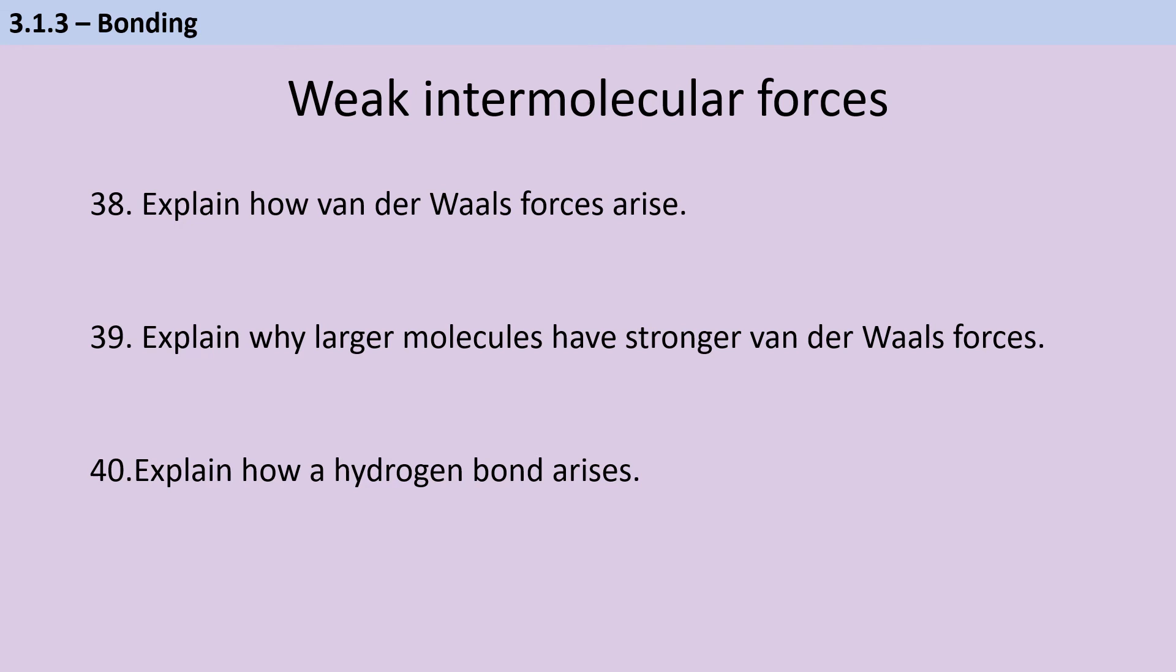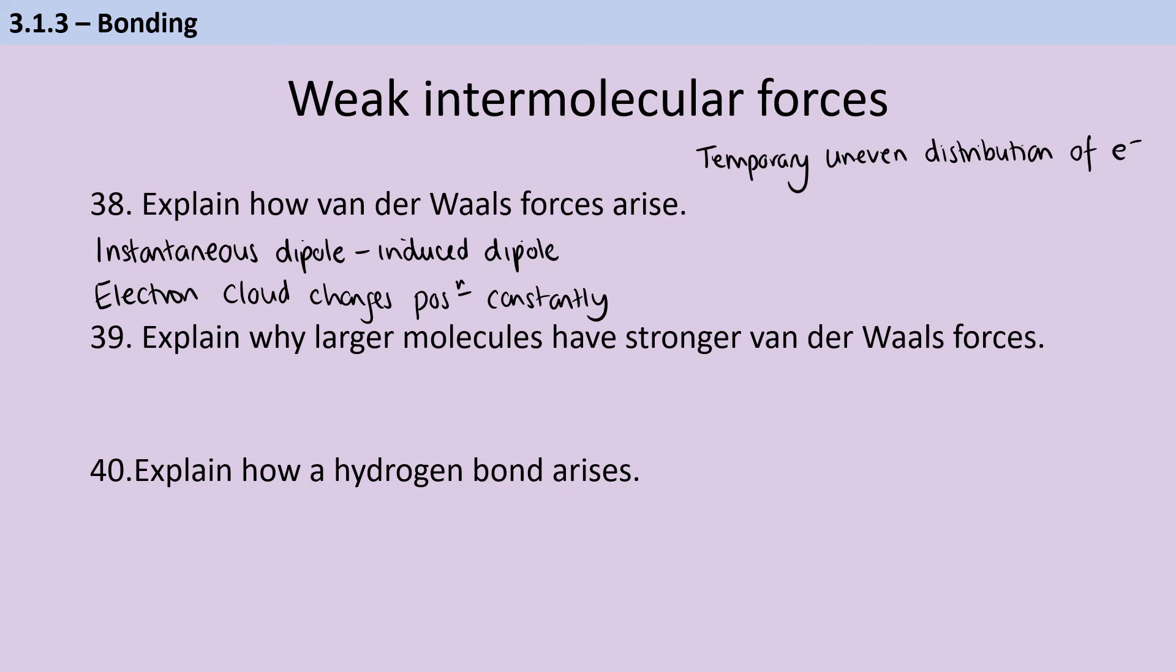It helps to explain why van der Waals forces arise if you know that they're also referred to as instantaneous dipole-induced dipole forces, which is a bit of a mouthful but does explain where this is coming from. So the first thing we need to remember is that electrons do not have a fixed location in space. They're constantly moving and the electron cloud is constantly changing position. So what that means is that we get a temporary uneven distribution of electrons and this is our instantaneous dipole. In other words, suddenly one side of the molecule or even one side of the atom, because, of course, van der Waals forces can arise on noble gases and things that are just single atoms on their own. Suddenly one side has slightly more electrons and therefore we have a slight negative charge compared to the slight positive charge on the other side of the molecule. And that's our instantaneous dipole.